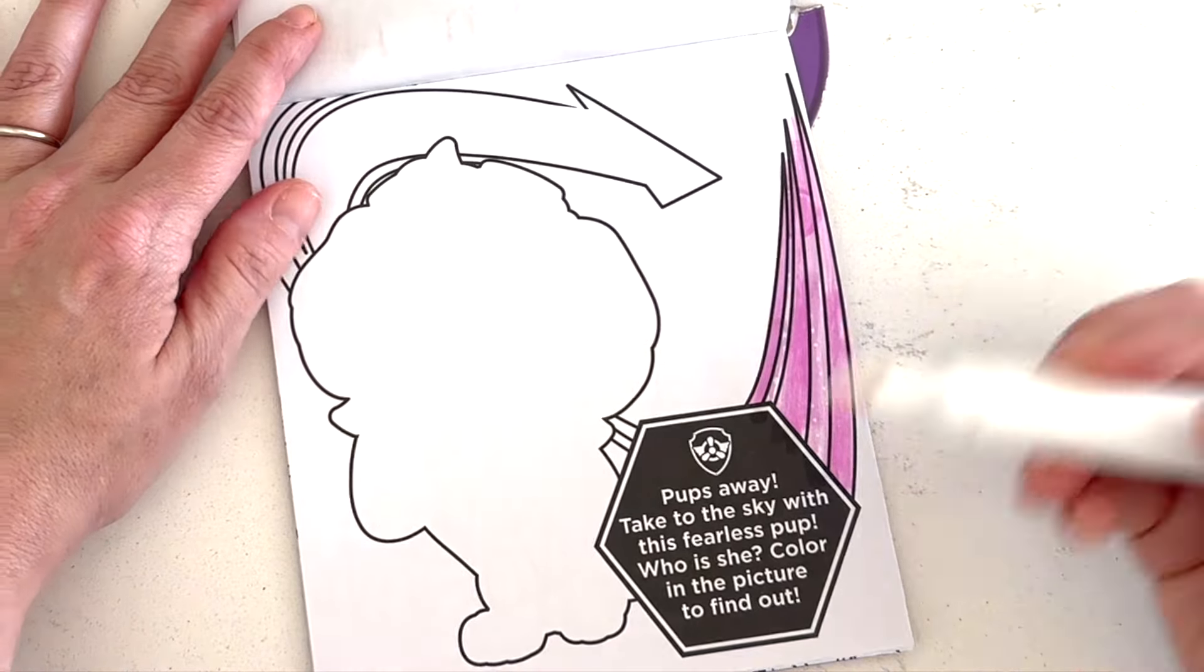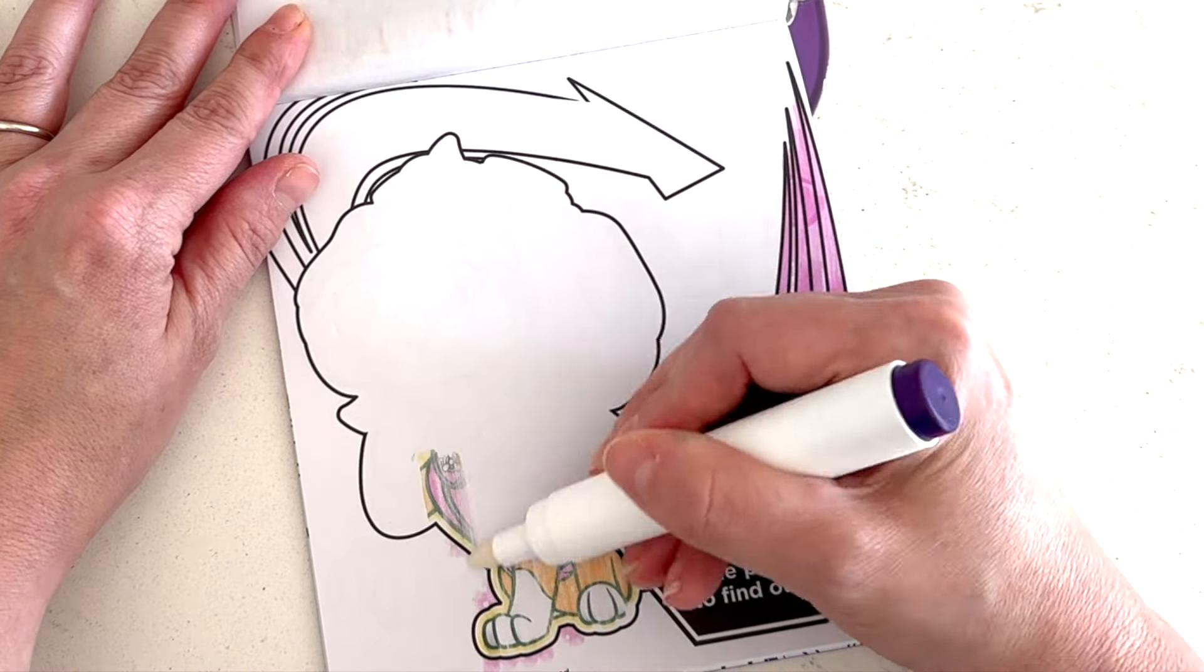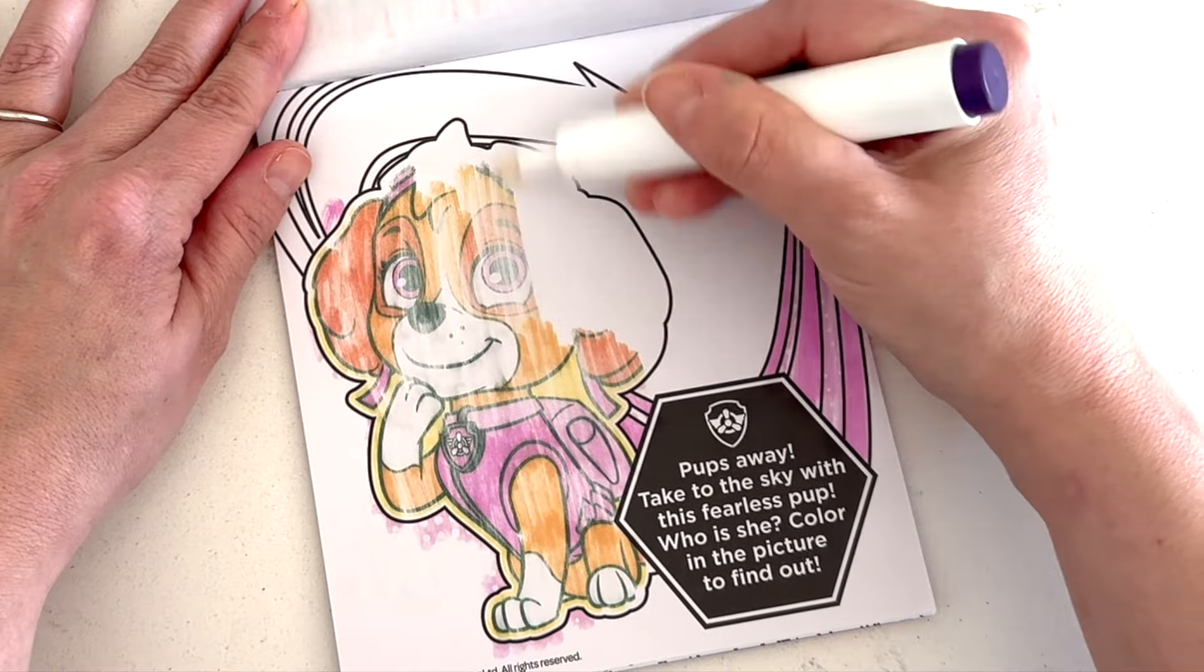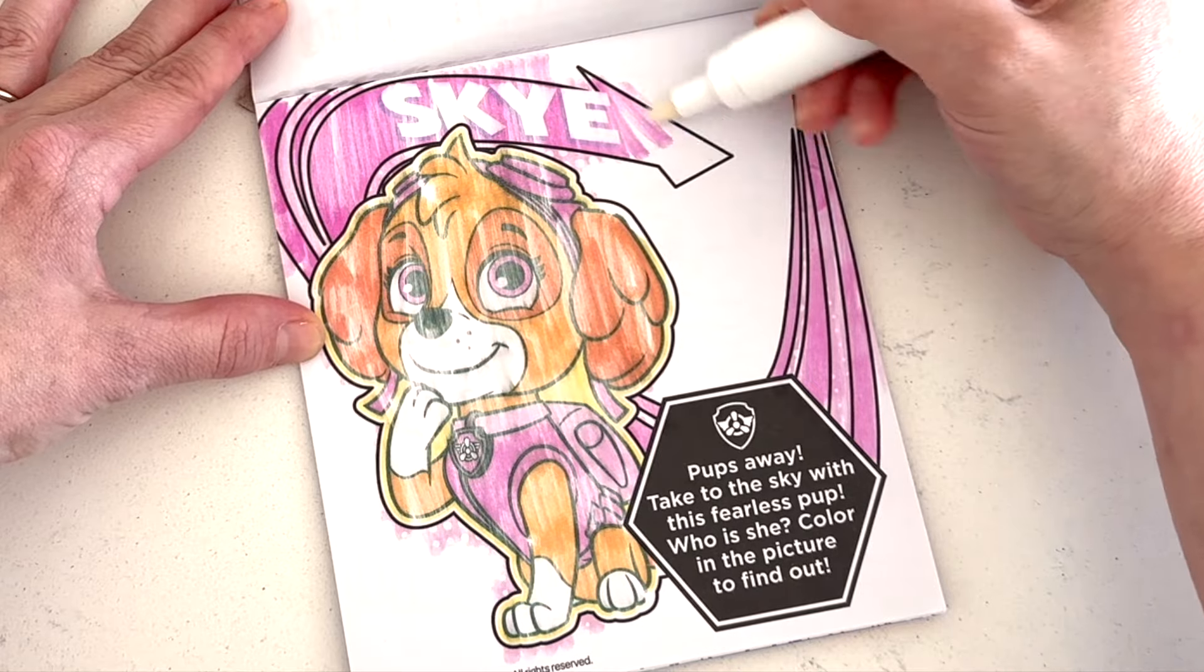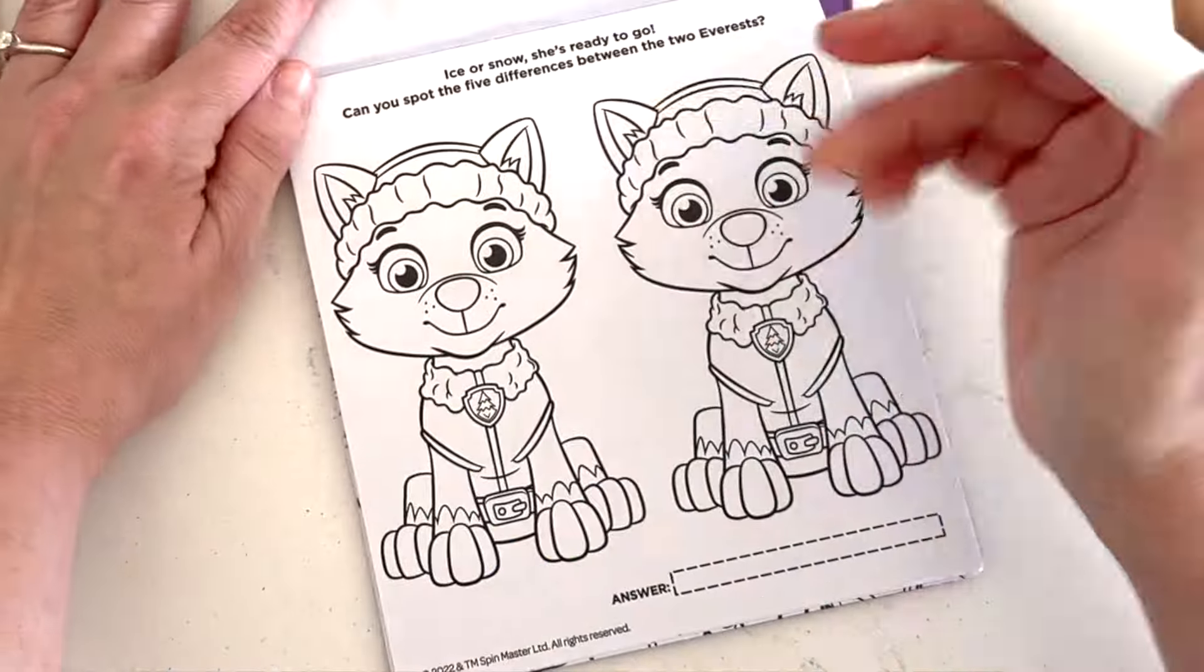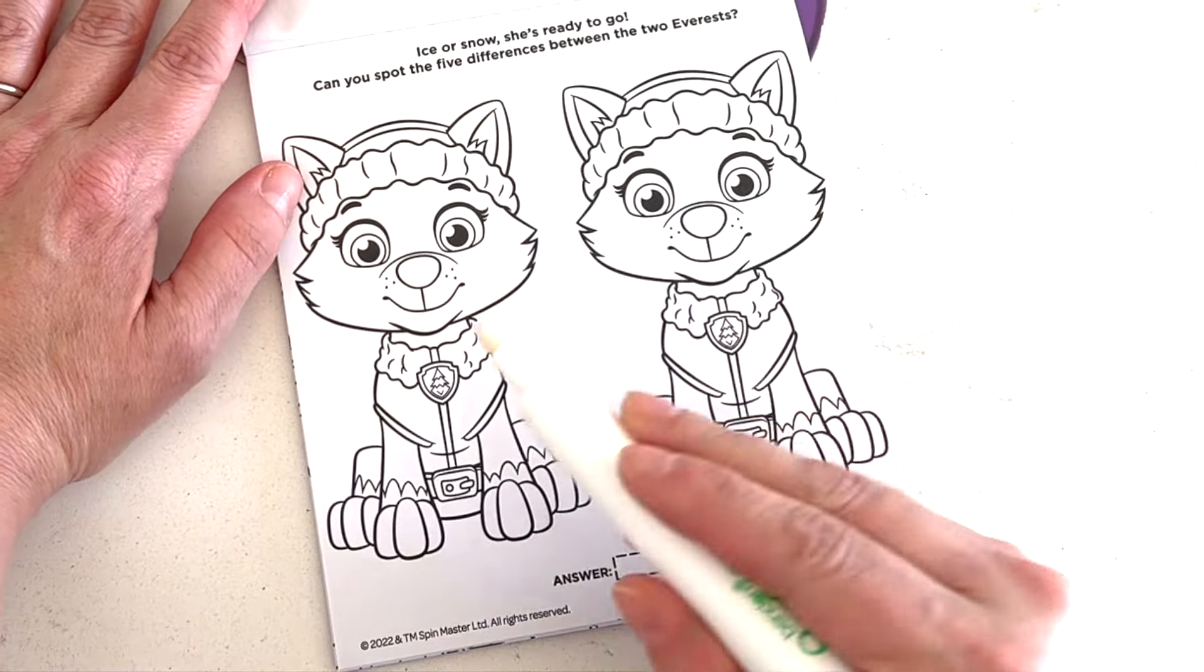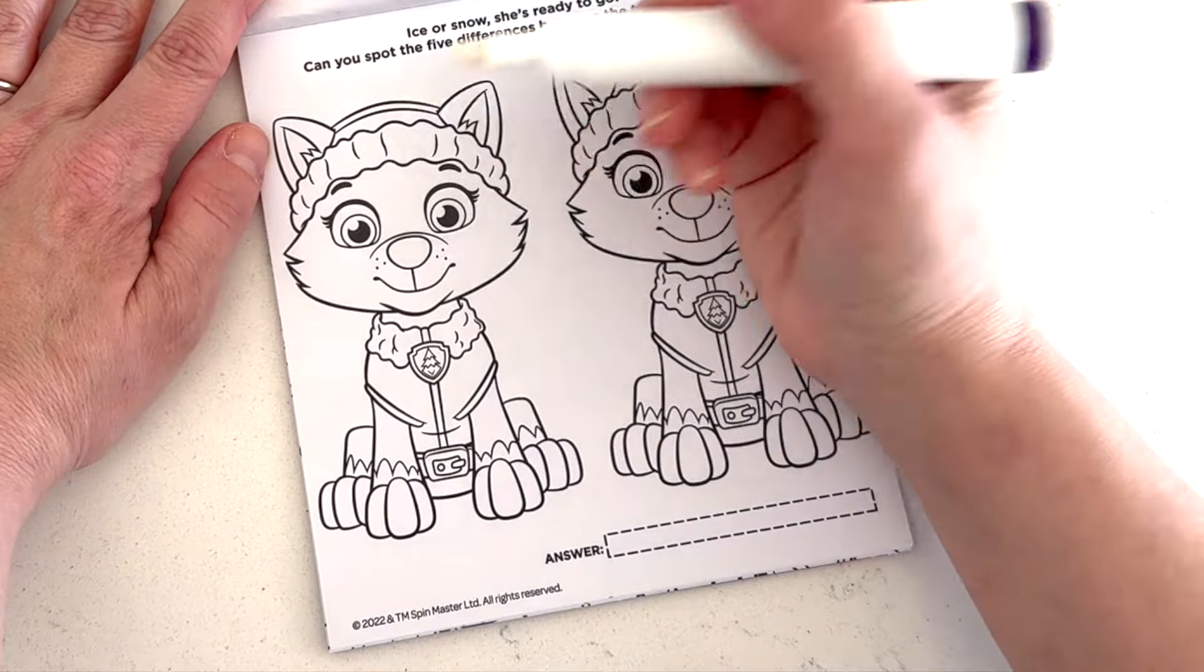Next page. Pups away. Take to the sky with our fearless pup. Who is she? Color the picture to find out. Hmm. I think I know who this one is. Do you think you know who this one is? Who wears pink? Hmm. Let's start at the bottom. You get it. It's Skye.